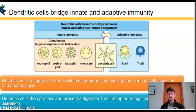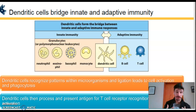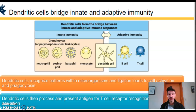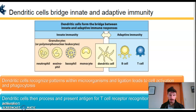Dendritic cells recognize PAMPs on invading pathogens and present the derived antigens to cells of the adaptive immune response, in particular to CD4-positive helper T cells. Those cells then send out cytokine signals determining whether it will be a humoral response — an antibody-mediated response from B cells — or a cell-mediated response from CD8 cytotoxic T cells.